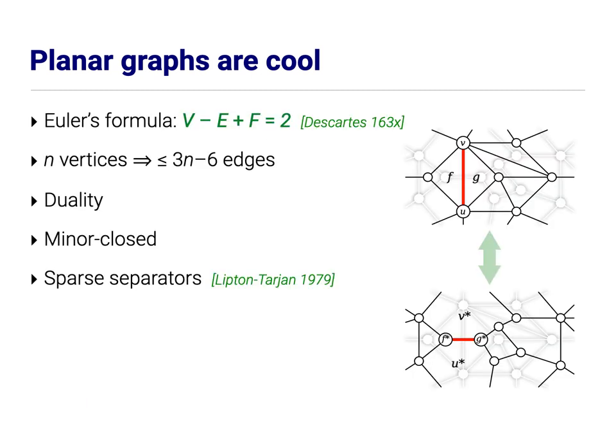Planar graphs have lots of interesting combinatorial properties, the most familiar of which is Euler's formula. In any planar drawing of a planar graph, the number of vertices minus the number of edges plus the number of faces is always equal to two.